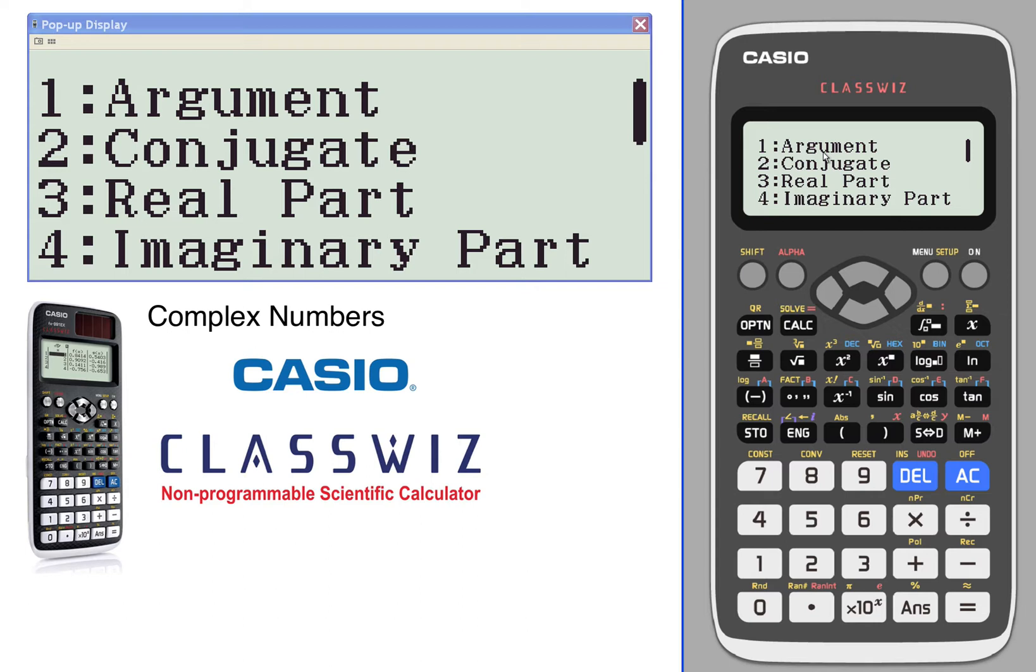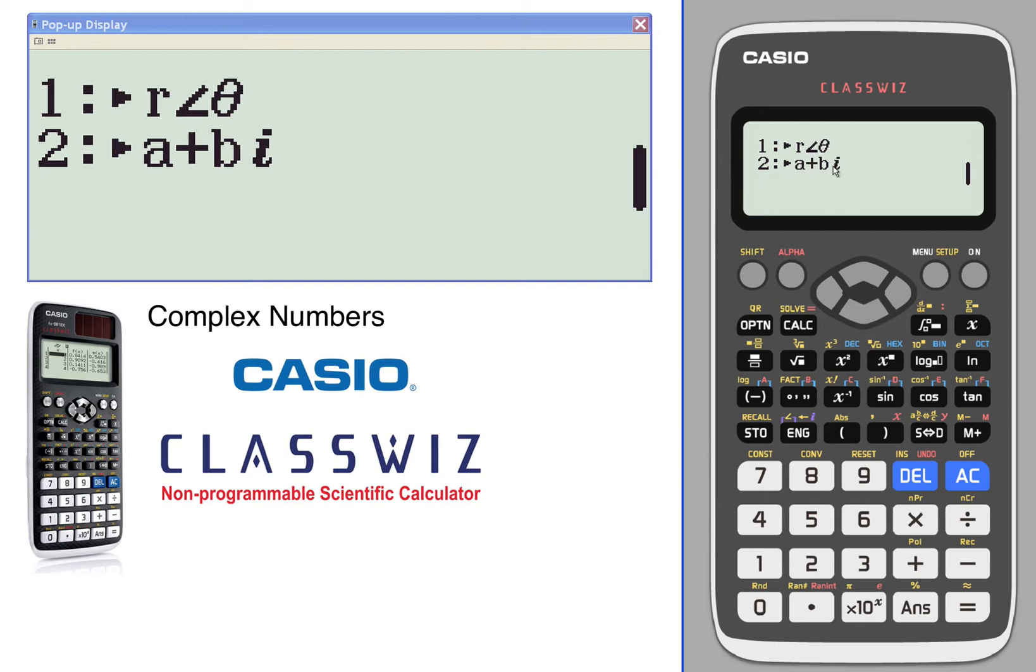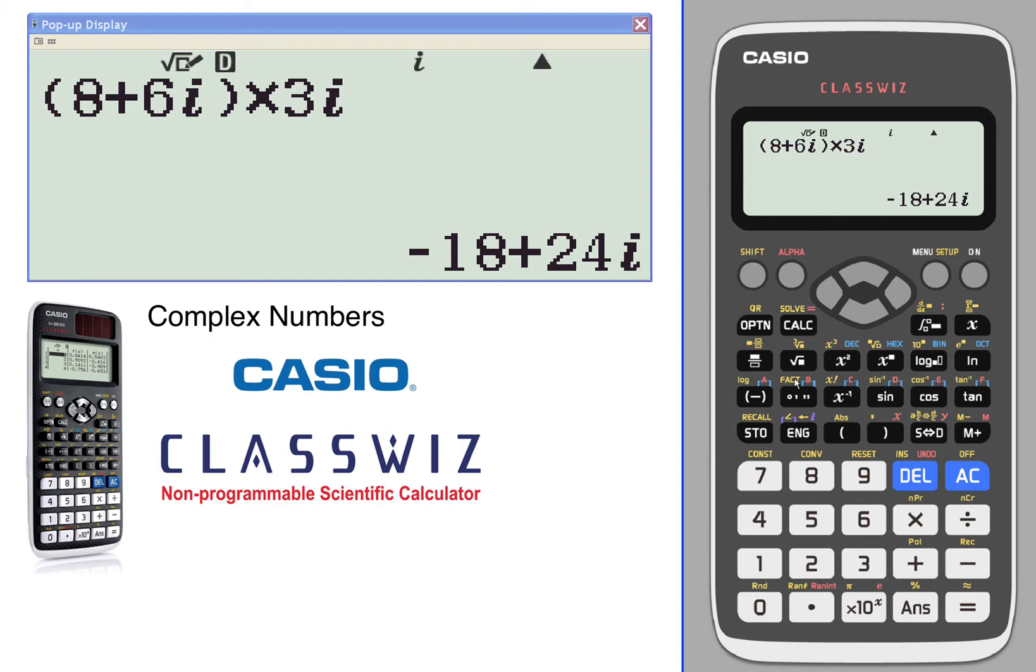The argument is the angle on the imaginary plane. There's also the conjugate, the real part, the imaginary part, and putting your solution in r-theta notation, or if you have it in r-theta, converting to complex mode. So we'll do an argument calculation.